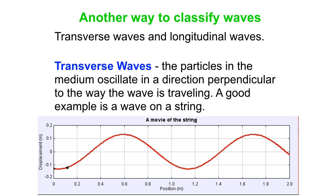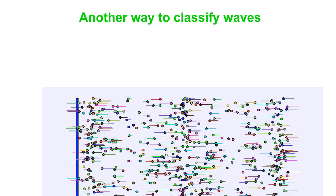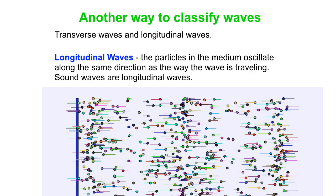A good example is a wave on a string. So the wave itself is traveling to the right, but the particles in the medium are just going up and down. That's a transverse direction to the way the wave itself is going, as opposed to longitudinal waves.